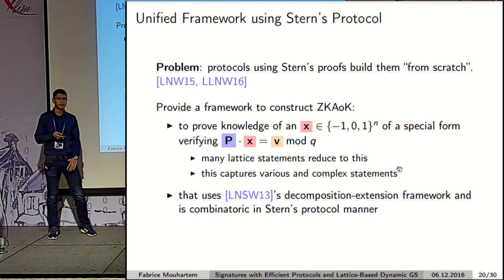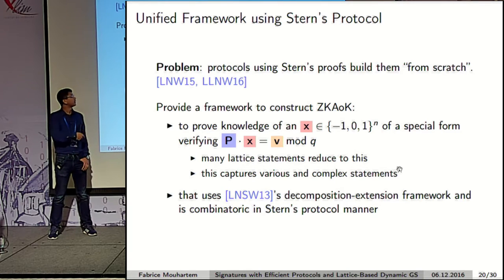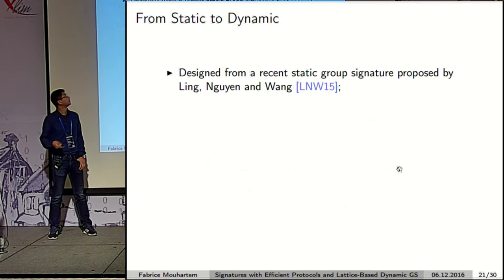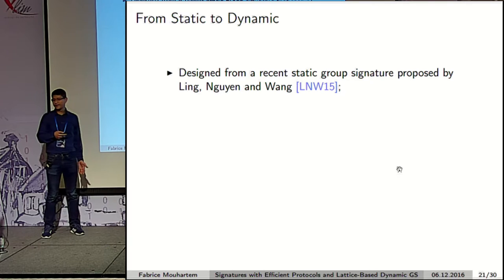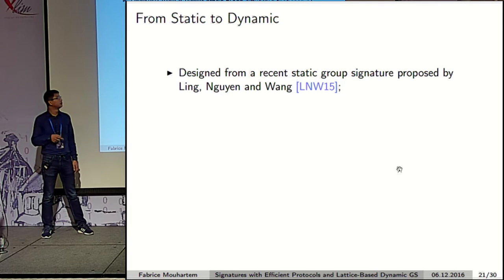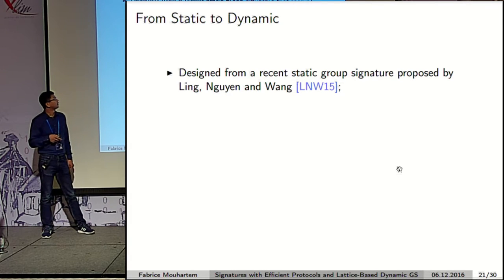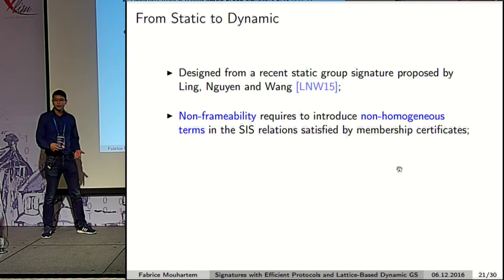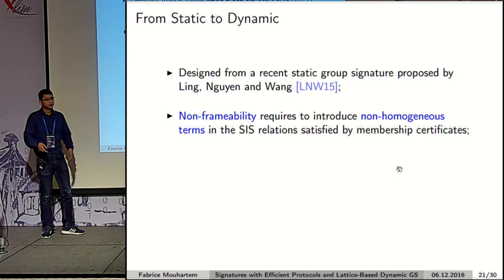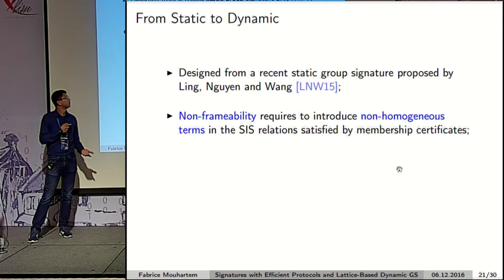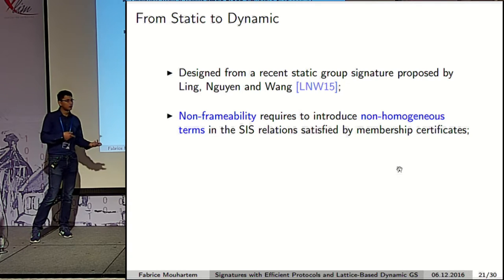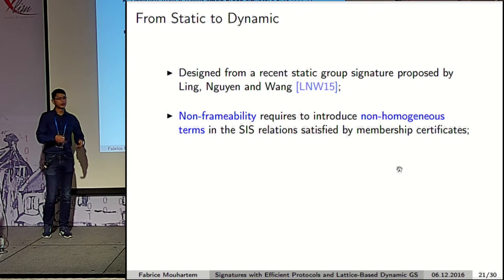Once we have our signature scheme with efficient protocols, we use it to construct our group signature. We build it from a static group signature due to Ling, Nguyen, and Wang. The main challenge we want to overcome is providing non-frameability. To do this, we need to introduce a non-homogeneous term in order to prevent a user from tampering with their membership certificate to escape traceability.